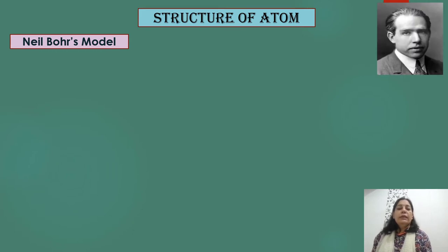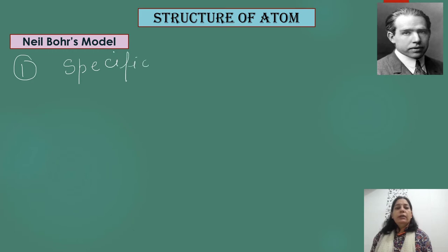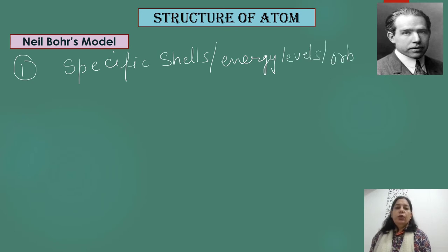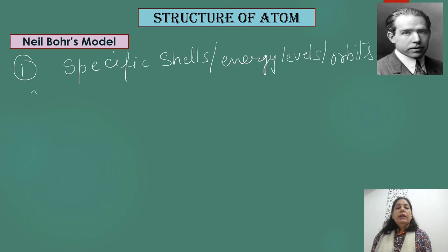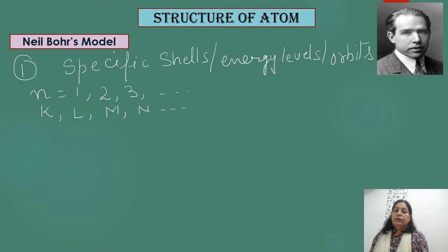The first postulate given by Niels Bohr states that electrons revolve around the nucleus in certain specific energy levels, also known as shells or orbits. He named these shells as energy levels and numbered them as N = 1, 2, 3, and so on. He designated these levels as K, L, M, N, and so on. So if we are talking about the K shell, we are talking about the first shell closest to the nucleus.